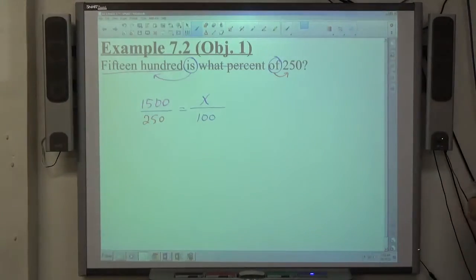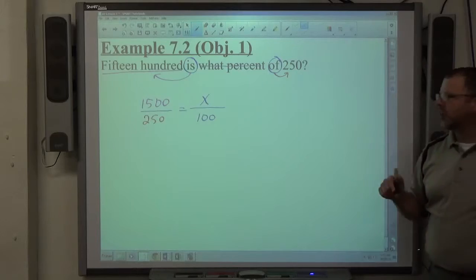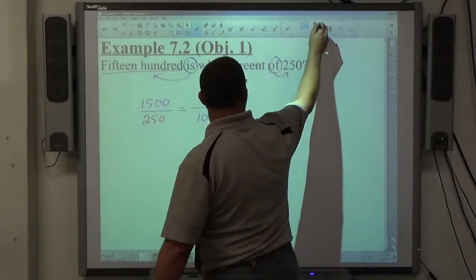Now, this time, the numbers are a little bit larger than they were last time. You might want to reduce stuff before you cross-multiply. It's not a requirement, just something to think about. For me, I would probably reduce this.